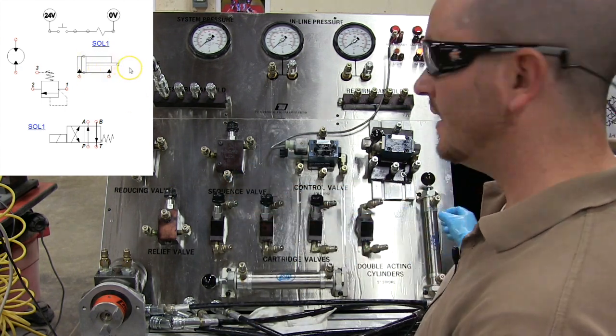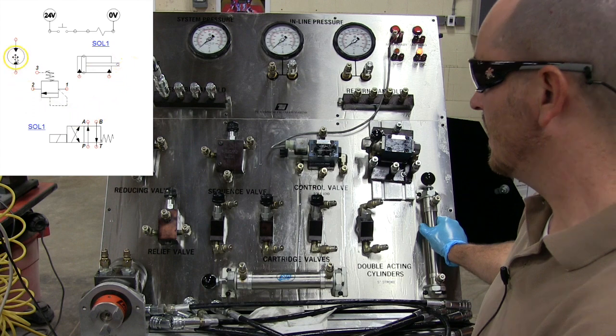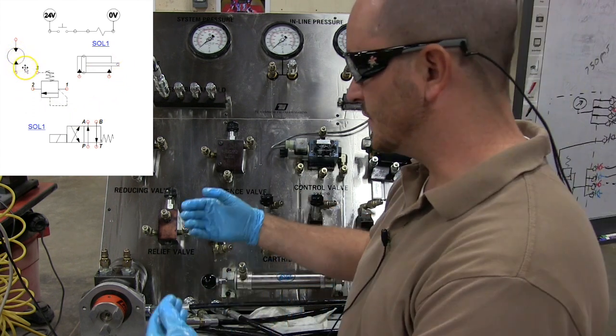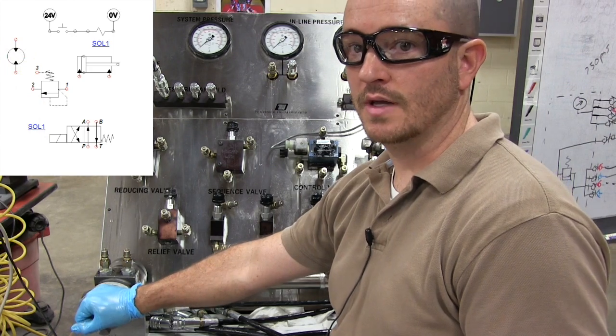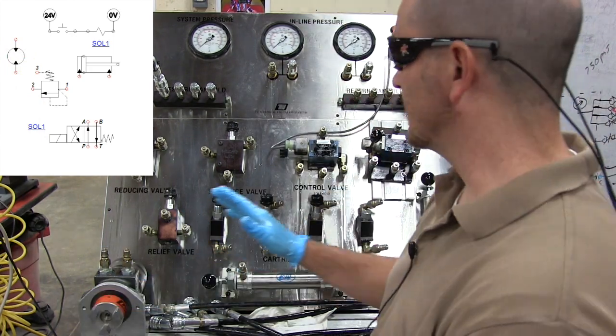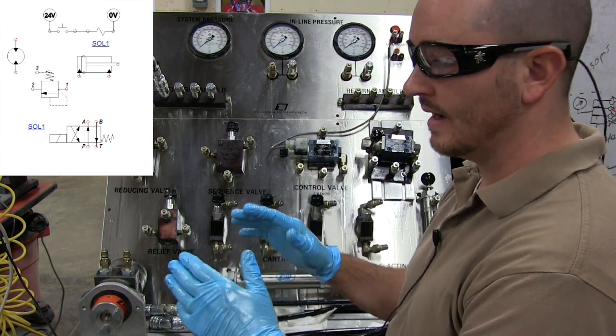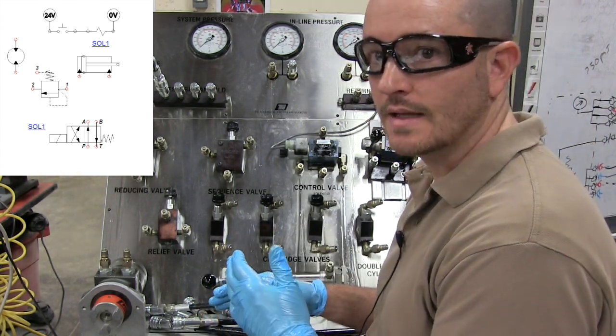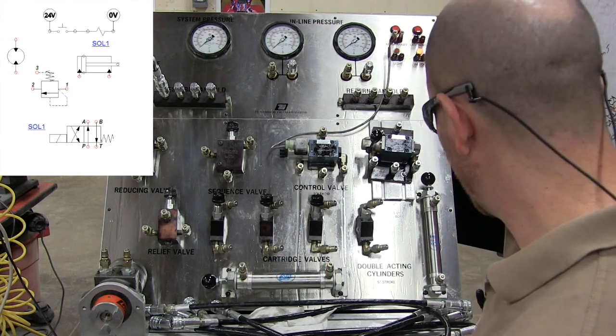In this case, we're going to have a cylinder extend, and when it's fully extended, the next sequence would be this motor running right here. There's a lot of hoses to this, and the schematic diagram is a little bigger than anything we've experienced before in these videos, but let's go ahead and take a look at it and see how it works.